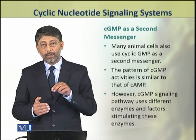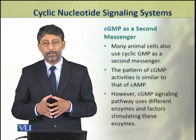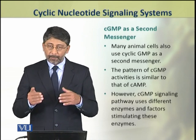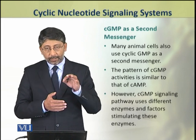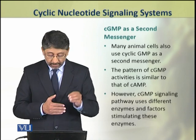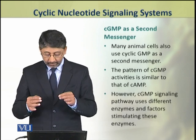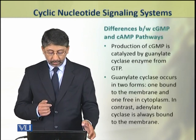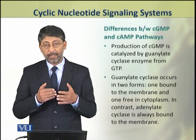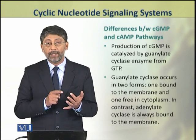Dear students, now we shall discuss cyclic GMP as a second messenger. Some cells also use cyclic GMP as a second messenger. The pattern of cyclic GMP activities is similar to that of cAMP. However, this pathway uses different enzymes and different factors which stimulate these enzymes. The production of cGMP is catalyzed by the enzyme guanylate cyclase.